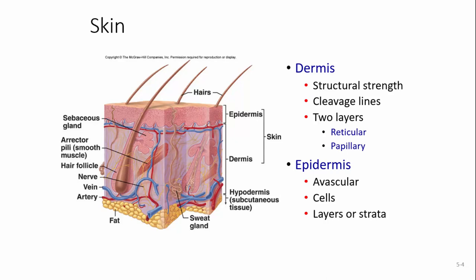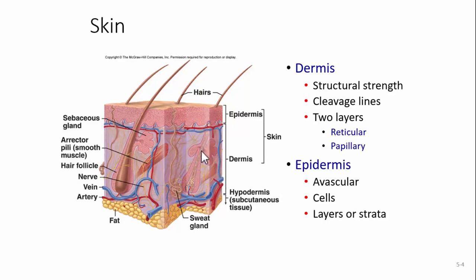The skin itself is made up of the dermis and epidermis, going from bottom up. The dermis gives the skin structural strength. It's going to create what are called cleavage lines. There are two layers: a reticular layer and a papillary layer. Papilla means finger-like projections. Three-dimensionally this would look like one of those egg crate foam mattress covers. That is the papillary layer, and the rest is the reticular layer.